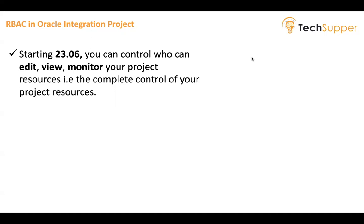You would have a project, and under that project you will create multiple resources such as connections, integrations, libraries, and lookups. You will also create deployments and there will be a runtime matrix as well. You can control who can update your integration project resources such as integrations and connections, who can view but cannot update, and who can monitor the metrics of a particular project.